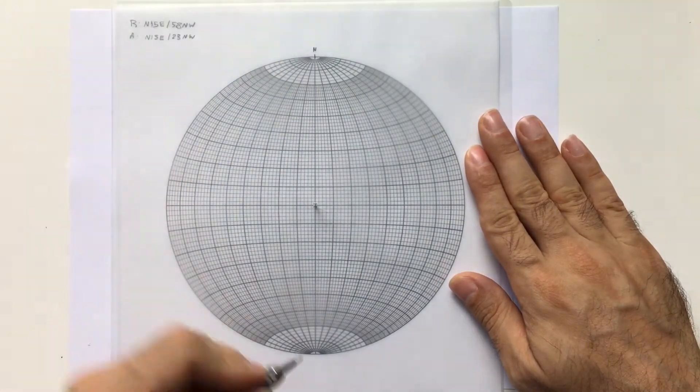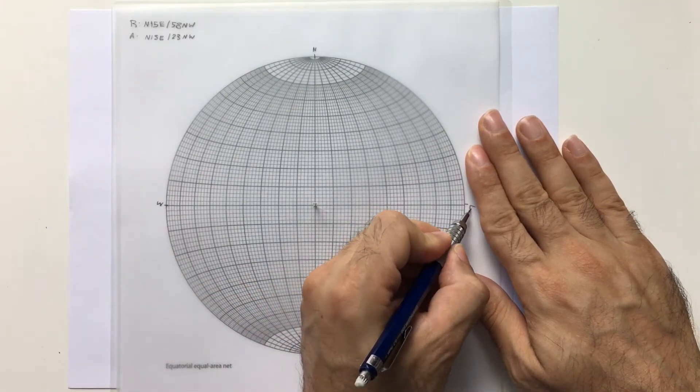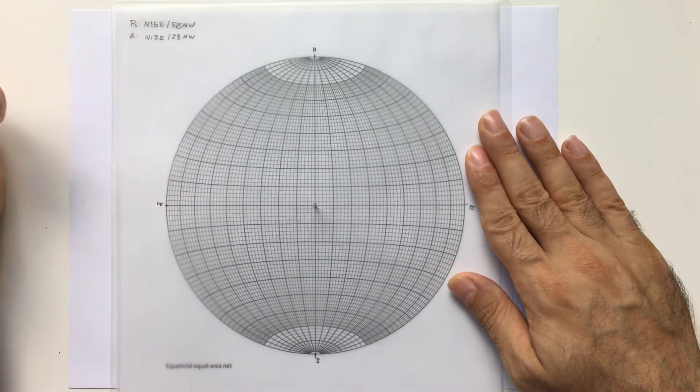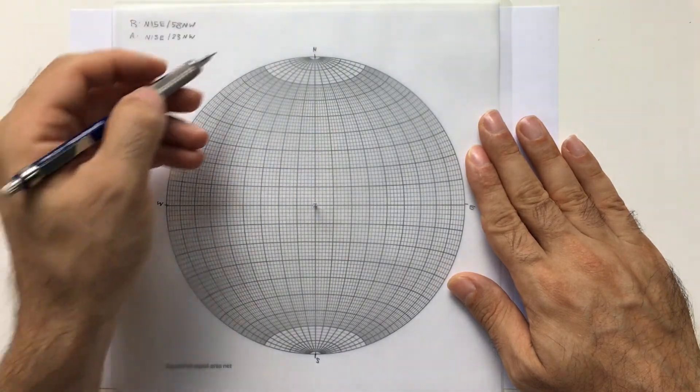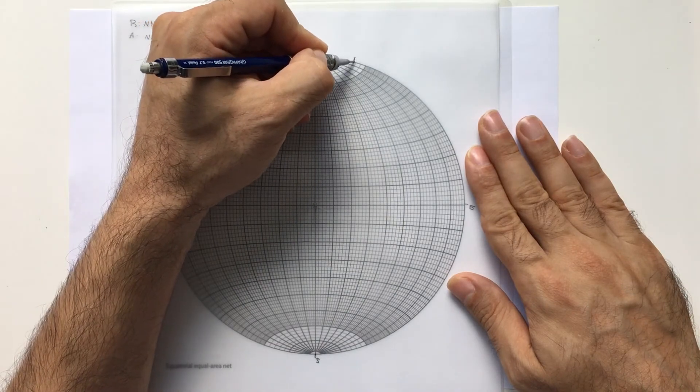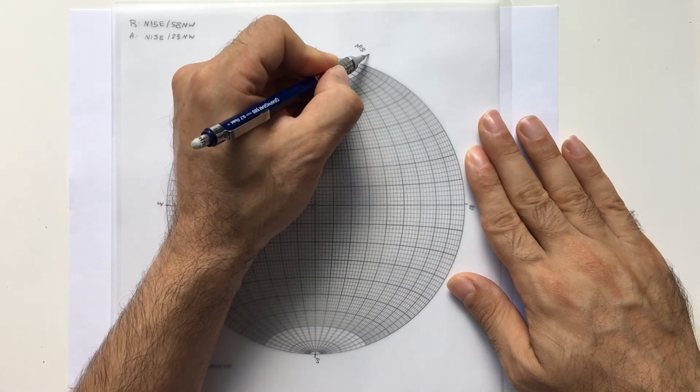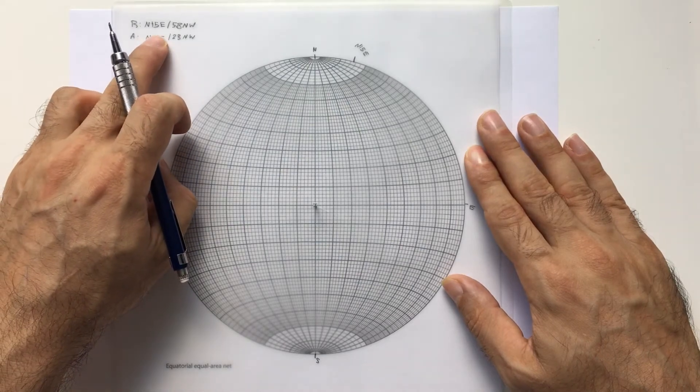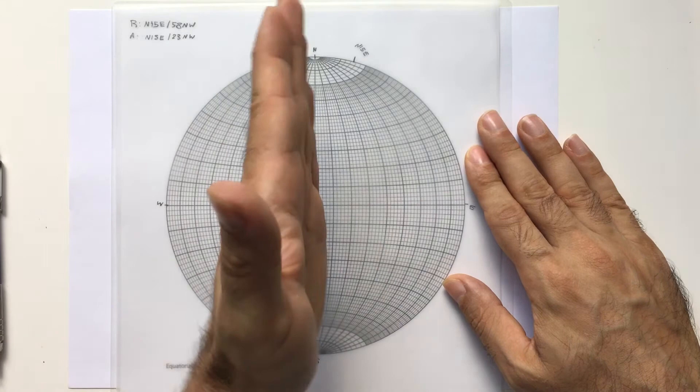This is my north, south, west, east. N15E means 15 degrees is the strike. You count the strike along the primitive circle. This is 10 degrees, 15 degrees. The bedding is dipping towards northwest.